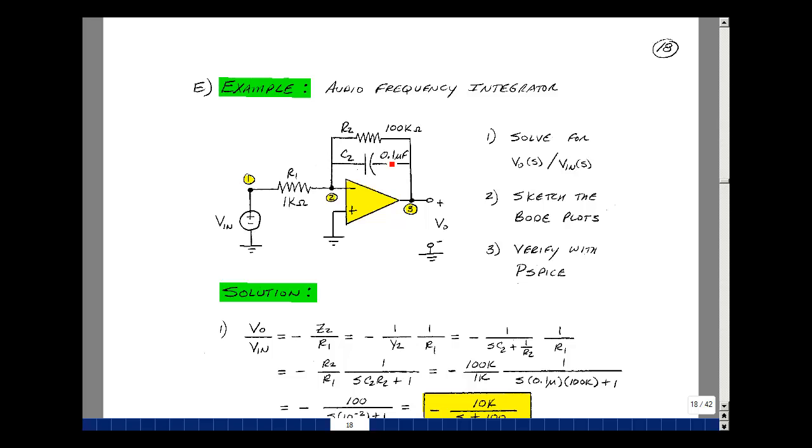The circuit is an inverting amplifier whose gain is minus Z2 over Z1. In this case, Z1 is just a resistor R1. Because I have two elements in parallel, I like to take the admittances, add them up, and then take the reciprocal. So I'm going to write Z2 as 1 over Y2.